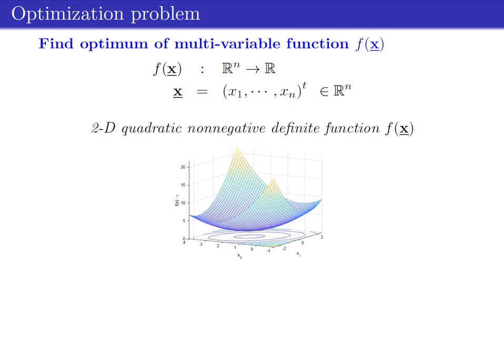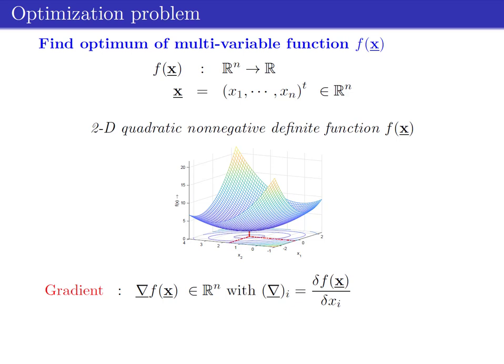The mathematical problem can be described as finding the optimum of the multivariable function f. An example of a two-dimensional non-negative definite quadratic function is given in the plot. The gradient, which is a vector whose elements represent the derivative along every dimension of x, plays an important role in defining the minimum or maximum of a multivariable function. A closed analytical solution for the global minimum can be found by solving for the value of x where the gradient equals zero.